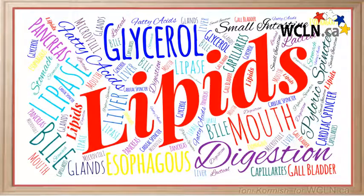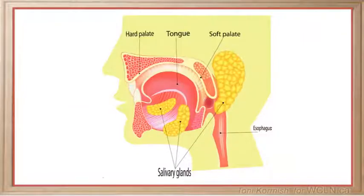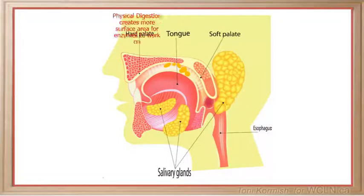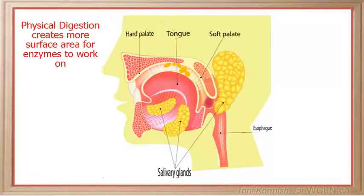In this video we will follow the digestion of lipids from the mouth through to the small intestine. The physical digestion of lipids begins in the mouth as the lipids are chewed, breaking down the lipids into smaller pieces. The physical digestion of lipids is important to create more surface area for the digestive enzymes to work on.